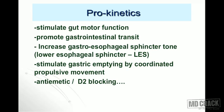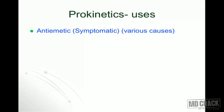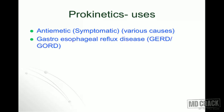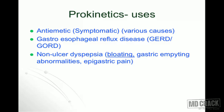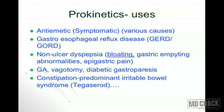When we speak of prokinetics, we mostly restrict to the upper gastrointestinal tract. Prokinetics are useful as anti-emetic drugs for symptomatic management of vomiting due to various causes. They're useful in management of gastroesophageal reflux disease — abbreviated GERD or GORD — non-ulcer dyspepsia especially bloating, gastric emptying abnormalities, epigastric pain, general anesthesia, vagotomy, and diabetic gastroparesis. Towards the bowel, they're useful in constipation-predominant irritable bowel syndrome.